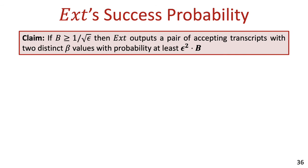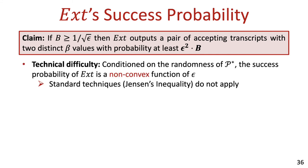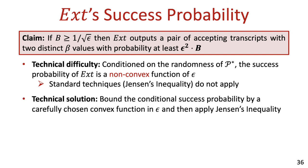As for the extractor's success probability, we prove a claim that if b is at least 1 over the square root of epsilon, then this probability is at least epsilon squared times b. Proving this claim is the most technical part of the proof. The main technical difficulty is that, conditioned on the randomness of P*, the success probability of the extractor is a non-convex function of P*'s advantage, which means that standard techniques using Jensen's inequality do not apply. Our solution is to bound this conditional probability from below by a carefully chosen convex function of epsilon, and then apply Jensen's inequality. The full proof can be found in the paper.